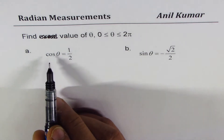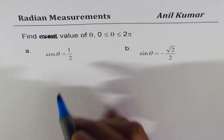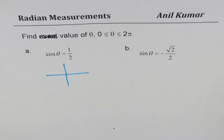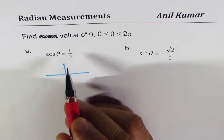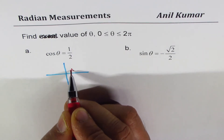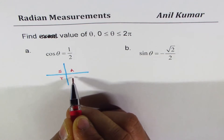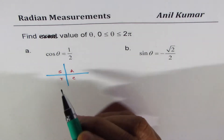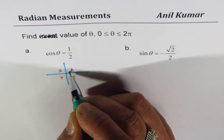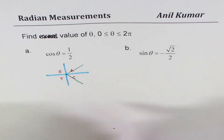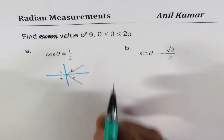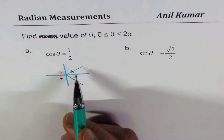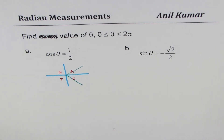The first one is cos θ = 1/2. Whenever we are given a ratio like this, we can see what the possible solutions are. All are positive in quadrant 1, sine in quadrant 2, tan in quadrant 3, and cosine in quadrant 4. So that gives us two possibilities of a positive value for 1/2, and within 0 to 2π we are looking for two possible solutions.